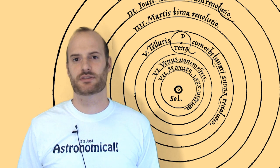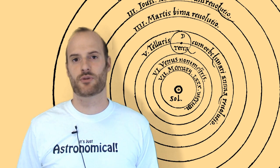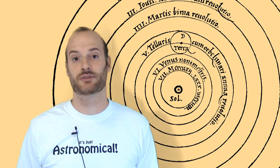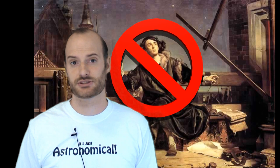Copernicus's theory that the Earth orbits the Sun marks the beginning of the scientific revolution. But his theory was widely rejected for many decades, not just by religious leaders, but by other astronomers who raised troubling questions that Copernicus couldn't answer.